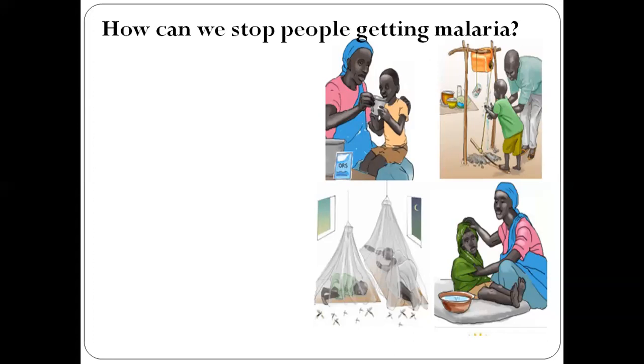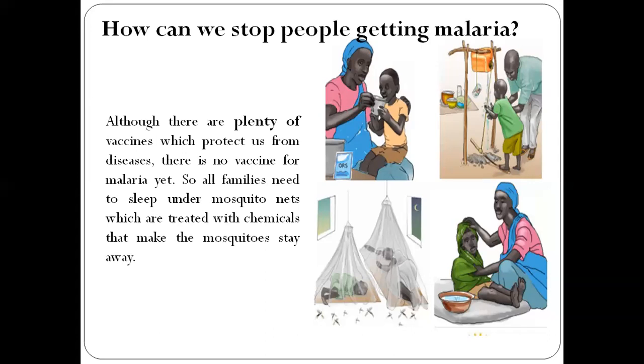How can we stop people getting malaria? Although there are plenty of vaccines which protect us from diseases, remember the information: although there are plenty of vaccines which protect us from diseases, there is no vaccine for malaria yet. So all families need to sleep under mosquito nets. You can see one baby and one adult, they are sleeping, which are treated with chemicals that make the mosquitoes stay away. These are some prevention you can see in the picture. How can they save themselves from malaria?